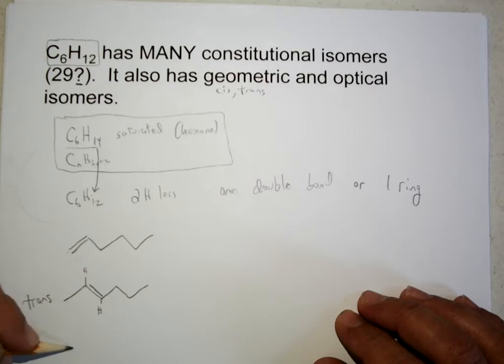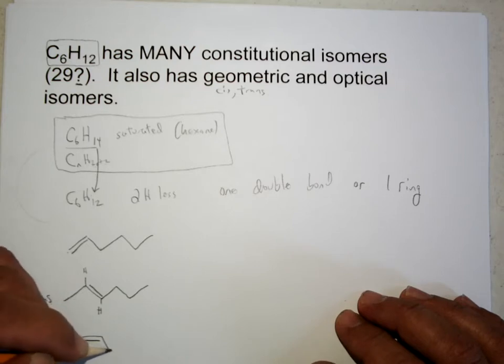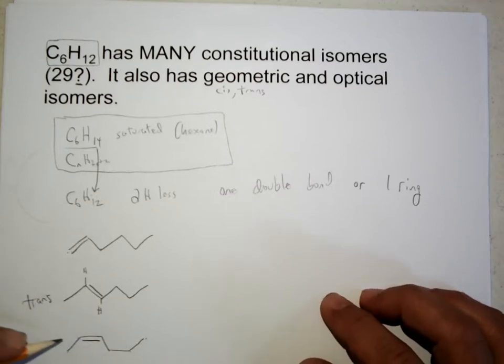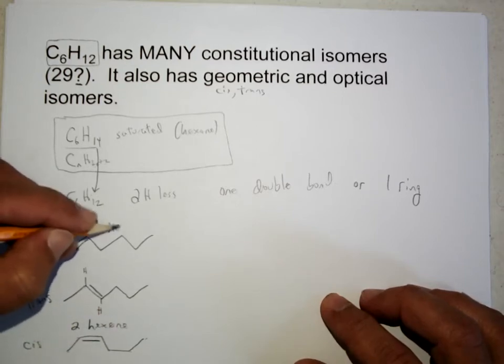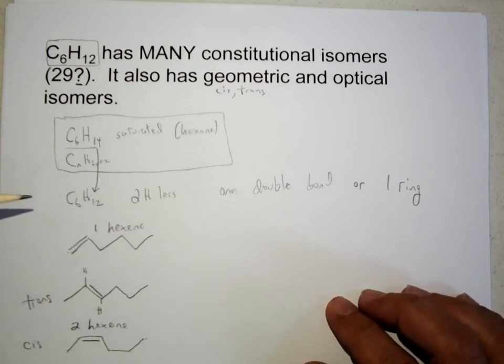You can also have the version of two-hexene. One, two, three, four, five, six, two-hexene that's cis. So cis and trans two-hexene, one-hexene, where the unsaturation is a double bond.